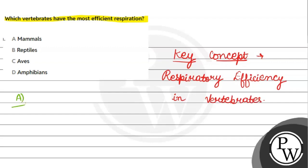Option first is mammals. What are mammals like humans? It's a well-developed respiratory system.